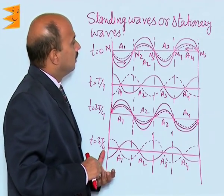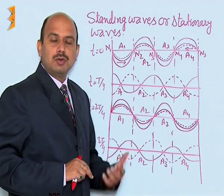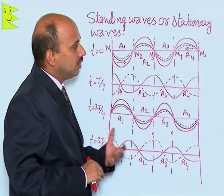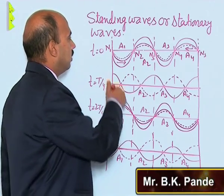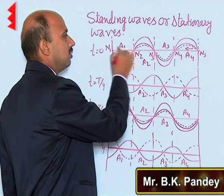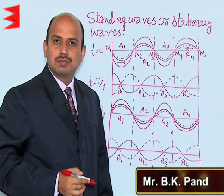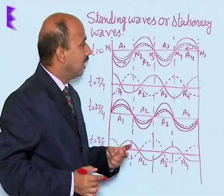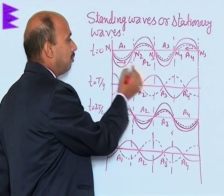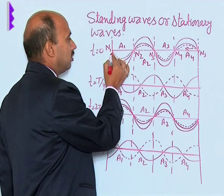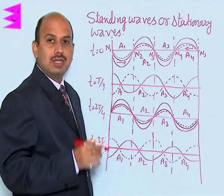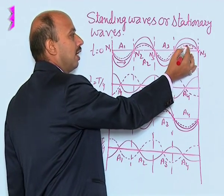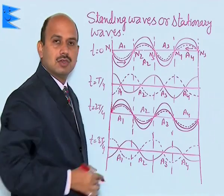Here there is a formation of a standing wave in a string. The string is taken with one end on this side and one end on the other side. There are two waves: one is an incident wave traveling from left to right, shown by the solid line, and one is the reflected wave, shown by the dotted line, coming from right to left.